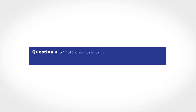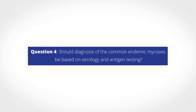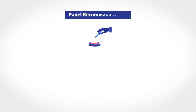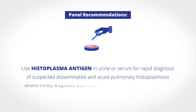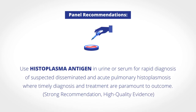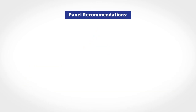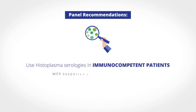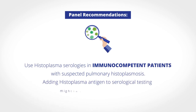Question 4 asks: Should diagnosis of the common endemic mycoses be based on serology and antigen testing? The panel recommends the use of histoplasma antigen in urine or serum for rapid diagnosis of suspected disseminated and acute pulmonary histoplasmosis, where timely diagnosis and treatment are paramount to outcome.